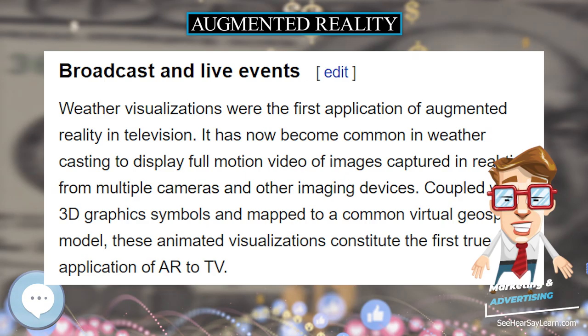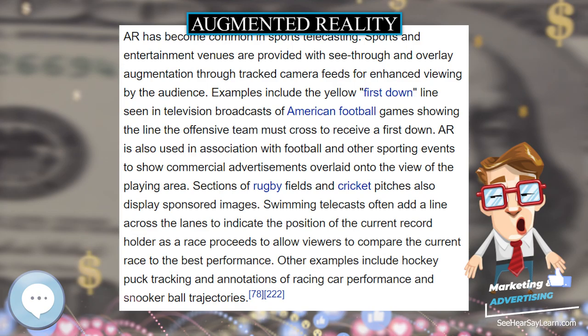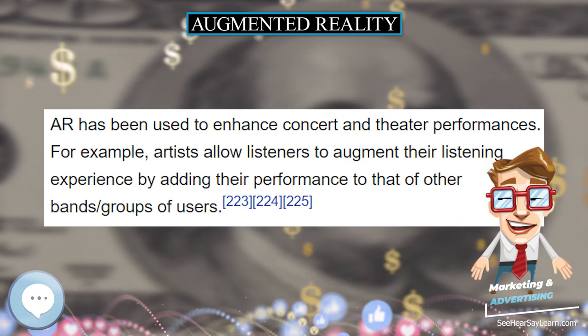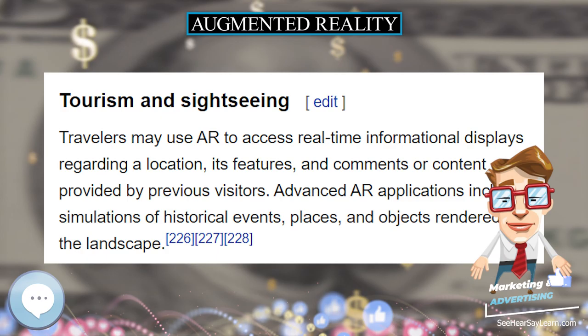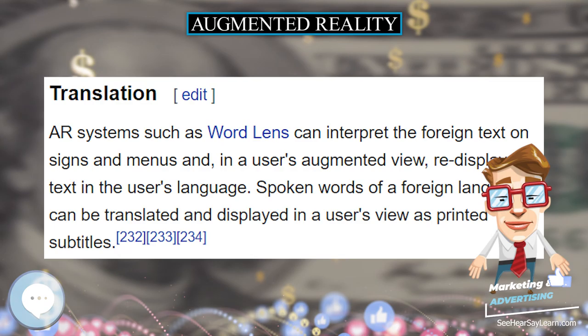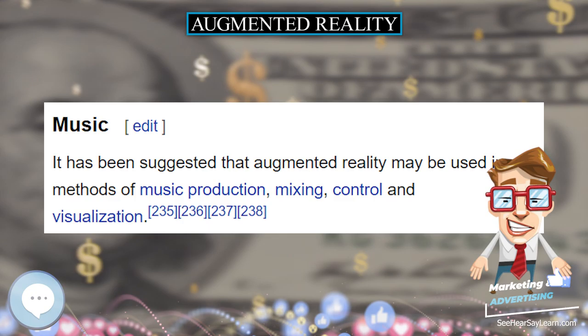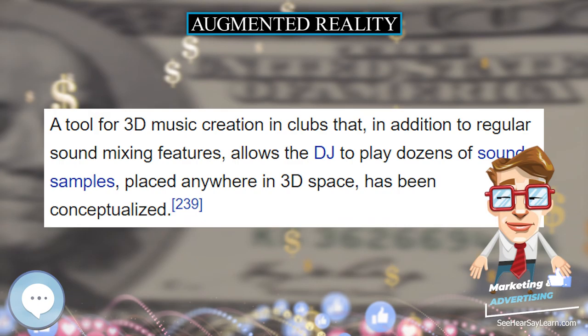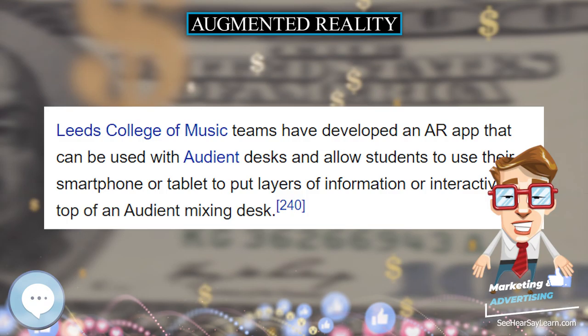The eye tap, also known as generation 2 glass, captures rays of light that would otherwise pass through the center of the lens of the wearer's eye and substitutes synthetic computer-controlled light for each ray of real light. The generation 4 glass, or laser eye tap, is similar to the VRD in that it uses a computer-controlled laser light source, except that it also has infinite depth of focus and causes the eye itself to function as both a camera and a display by way of exact alignment with the eye and re-synthesis in laser light of rays of light entering the eye.